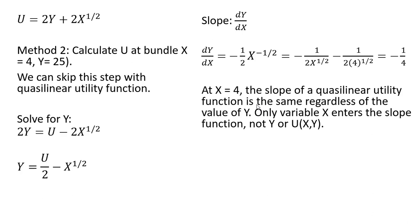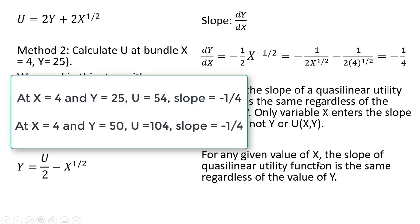At x equals 4, the slope of a quasi-linear utility function is the same regardless of the value of y. So if y was 10 or y was 100, so long as x equals 4, the slope would be minus one-fourth. Mathematically, only the variable x enters the slope function — the derivative is a slope function, and y doesn't appear in it. Utility, which is a function of x and y, also doesn't appear in the slope function. When you take the derivative, u divided by 2 is just a constant that drops out. So for any fixed value of x, the slope of a quasi-linear utility function is the same regardless of y. This isn't true for our first utility function — that Cobb-Douglas utility function — that property doesn't hold.